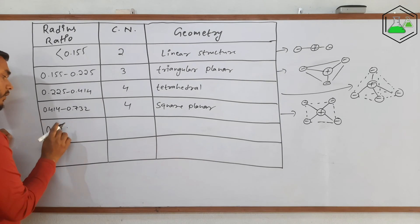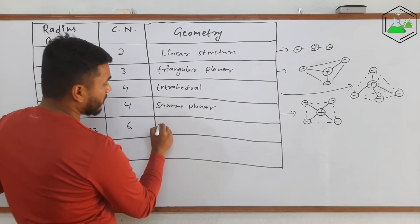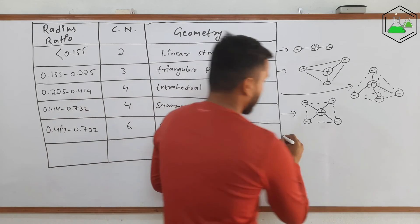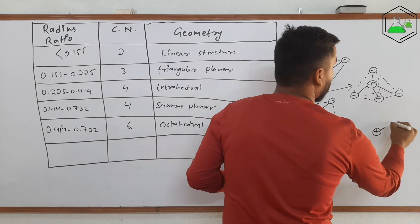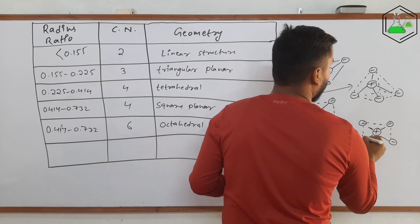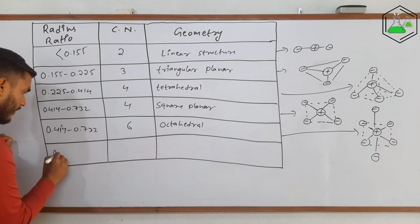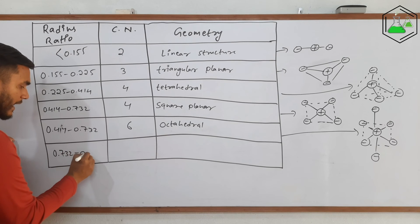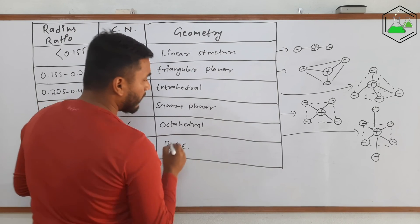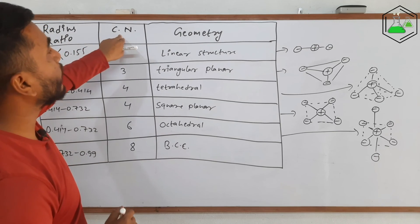For the same radius ratio range of 0.414 to 0.732, one more structure is possible: coordination number 6 with an octahedral structure — a central positive ion surrounded by six negative ions all bonded to each other. If the radius ratio is between 0.732 and 0.999, the coordination number will be 8 and the structure will be BCC, meaning body-centered cubic. So this is the complete chart of radius ratio values along with coordination number and geometry.